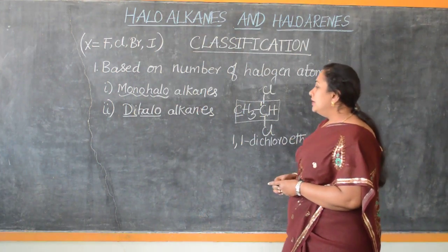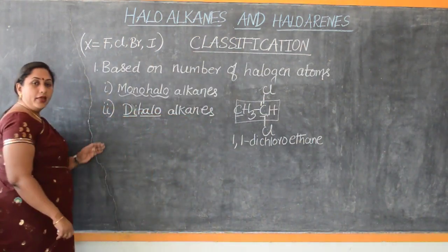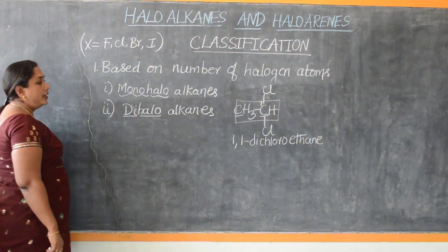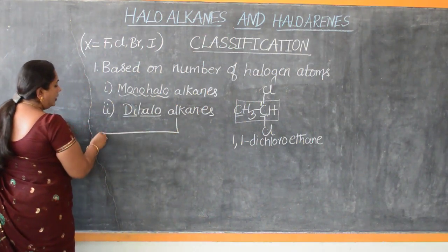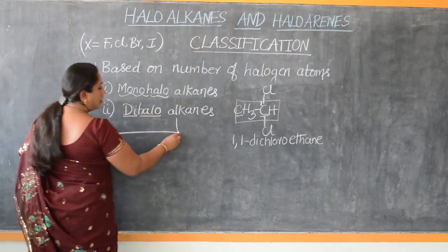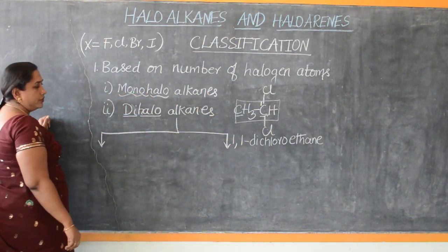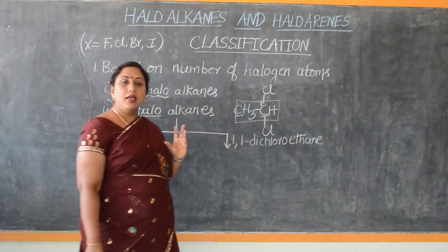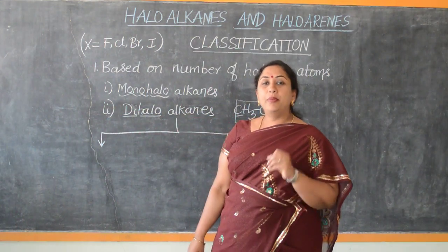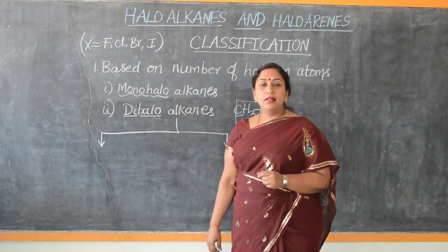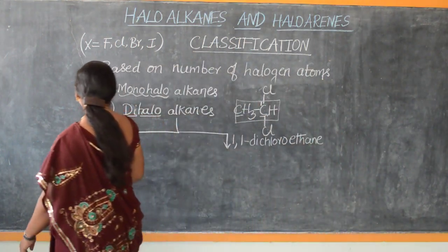Di-haloalkanes are further categorized into two types. This categorization is purely based on the position where the halogen atom is attached. So what are the classifications? Let us look at them and learn in a little detail.